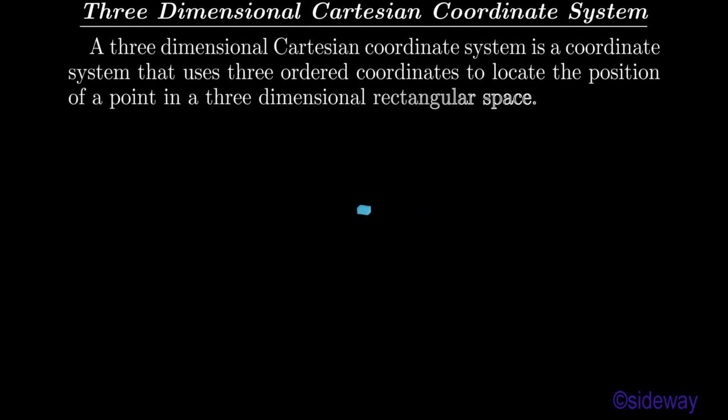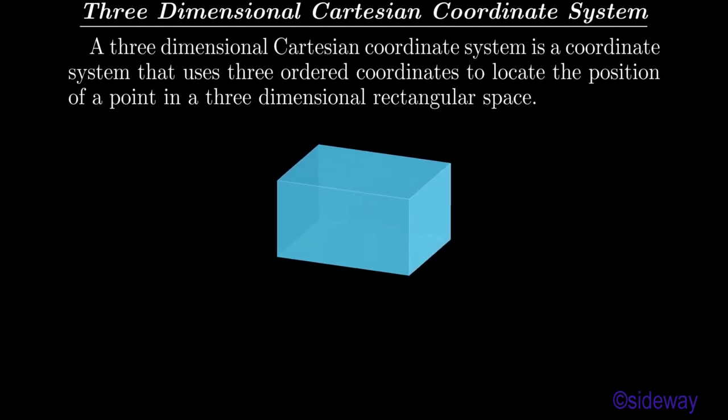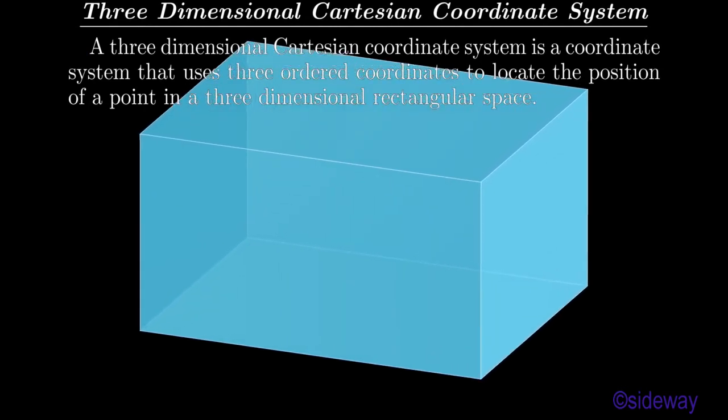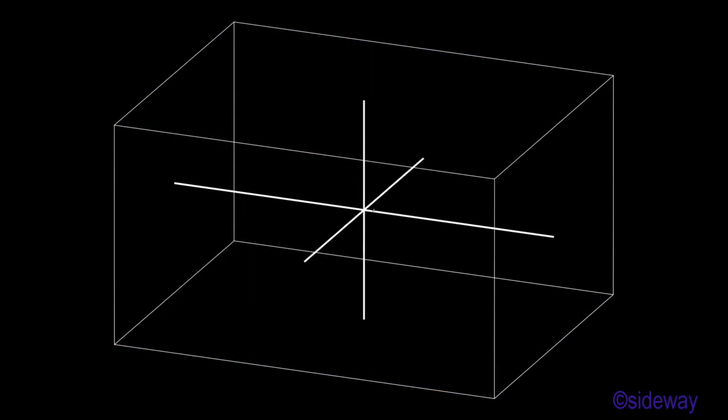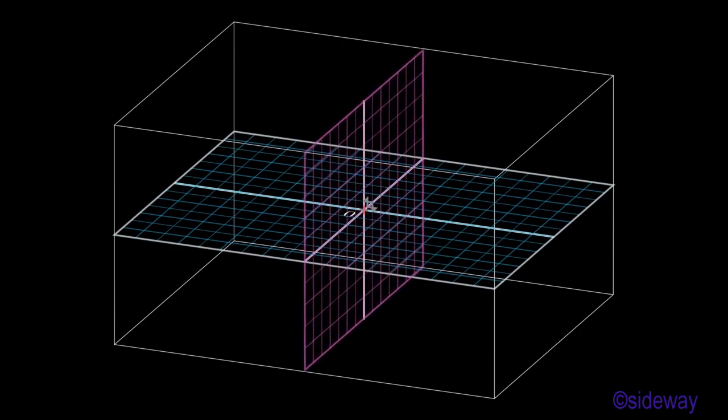Three-dimensional Cartesian Coordinate System. A three-dimensional Cartesian coordinate system is a coordinate system that uses three ordered coordinates to locate the position of a point in a three-dimensional rectangular space. Three arbitrary mutually perpendicular number lines in space are chosen as the coordinate axes. The point intersected at the respective origins of axes is the origin, or position zero, of the three-dimensional Cartesian coordinate system, where something begins or emanates from. The ordered coordinates of a point in rectangular space are defined as the projected measurement of the signed distances, measured along the corresponding axis from the respective origins of axes accordingly.